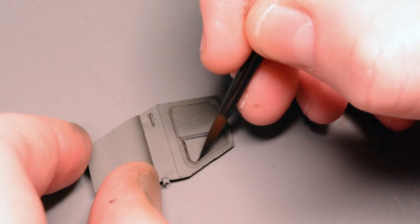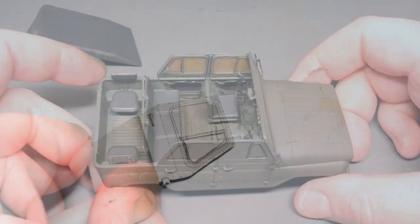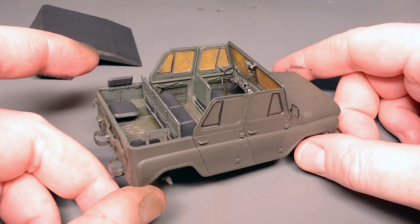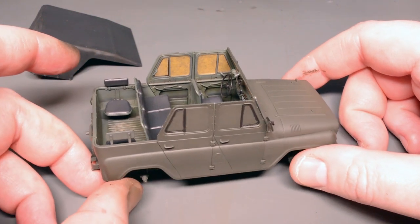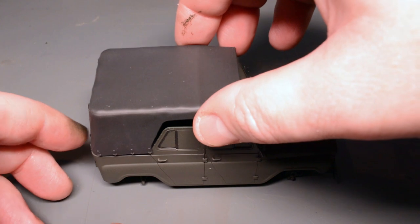With the masking still in place I picked out the window seals with Army Painter Matte Black and I used the same black to paint in the wing mirrors before removing the masking and it was time to say goodbye to all that interior detail by adding the roof.